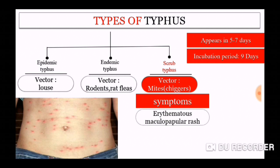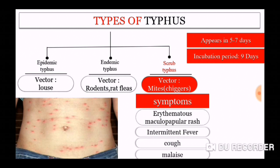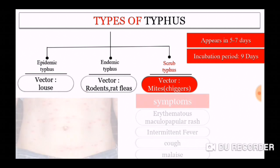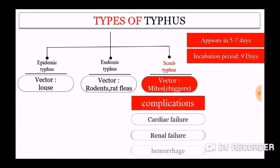The major symptom of scrub typhus is an erythematous maculopapular rash. The major complications of scrub typhus include cardiac failure, renal failure, and hemorrhage, as scrub typhus mainly affects the cardiovascular system and lungs.